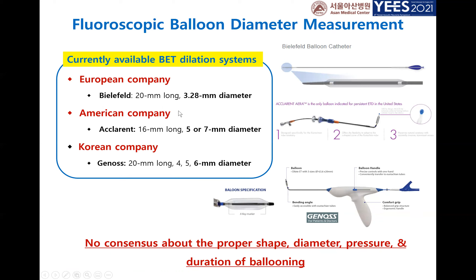Currently, many balloon dilation systems are available around the world. There is a European company, an American company, and also two Korean companies producing balloon systems. Generally, the length of the balloon ranges from 16 to 20 millimeters, and the diameter is around 3 to 6 millimeters. This means there is currently no consensus about the proper shape, diameter, pressure, or duration of ballooning.